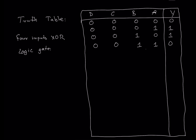The fifth condition: if A is low, B is low, C is high, and D is low, output Y will be high because we have an odd number of high inputs. If A is high, B is low, C is high, and D is low, the output will be low or zero. If A is low, B is high, C is high, and D is low, the output will be low. If A is high, B is high, and C is high, the output will be high.